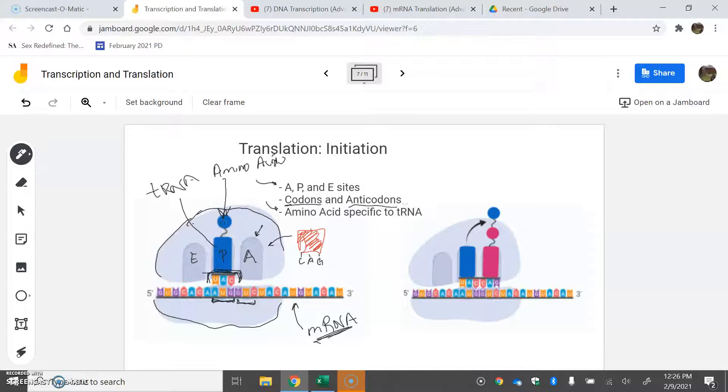This spot here is the arrival spot. If it has the correct anticodon, it can fit in there. Our next codon is GUC, so our anticodon would be CAG. This transfer RNA is carrying with it a very specific amino acid. It's going to go into the arrival site.